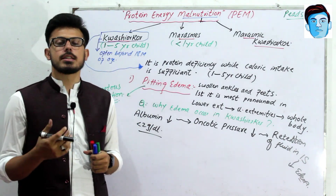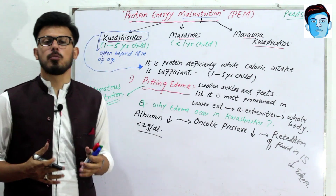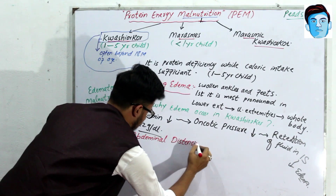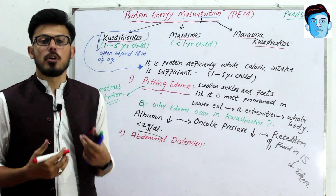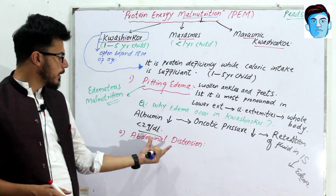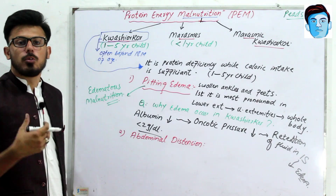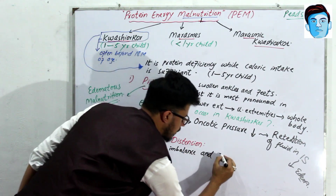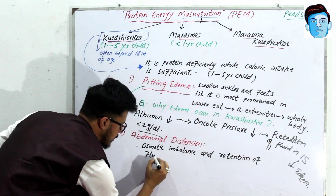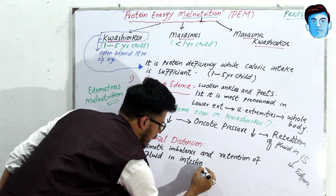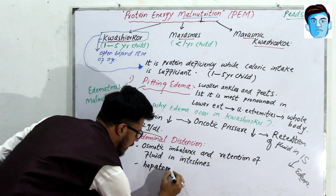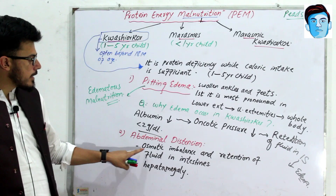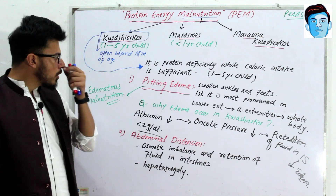The second most important presentation in kwashiorkor is abdominal distension, also called protuberant belly or pot belly. There are two major reasons for abdominal distension: first, osmotic imbalance and retention of fluid in the intestines; and second, hepatomegaly.